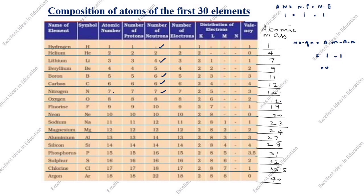Oxygen: atomic mass 16, atomic number 8, so 16 minus 8 gives 8 neutrons. Fluorine: atomic mass 19, 19 minus 9 is 10. Neon: atomic mass 20, atomic number 10, so 20 minus 10 is 10.